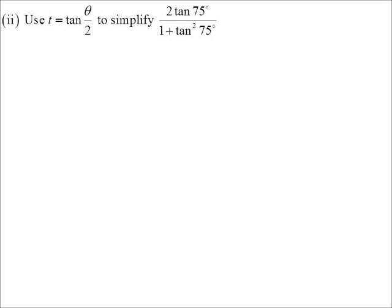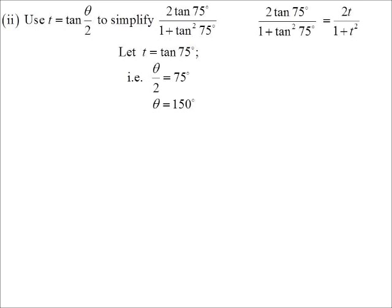So if I let T be the tan 75, in other words, theta is 150 for this. But I've got two tan 75 on one plus tan squared. So two T on one plus T squared, which is the T result for sine theta. But in our case, 75 is the half. So 150 is the whole. So we're talking about sine 150 degrees there.